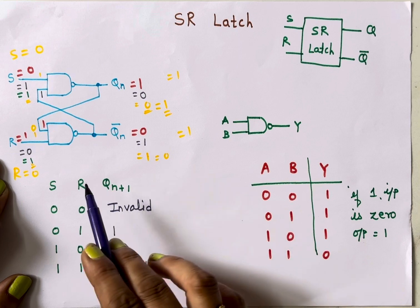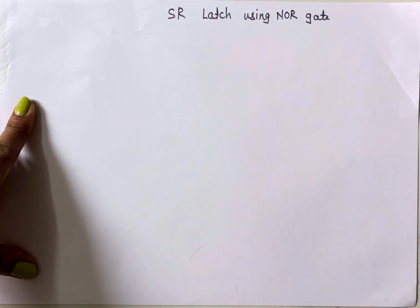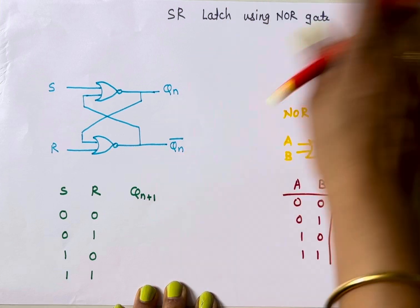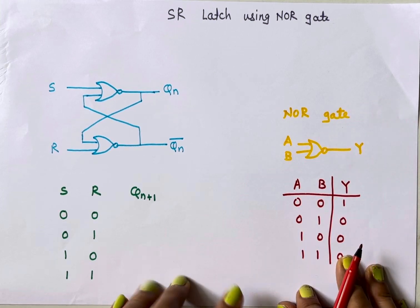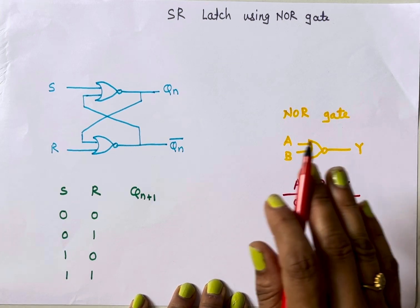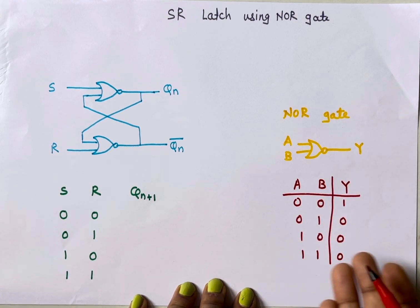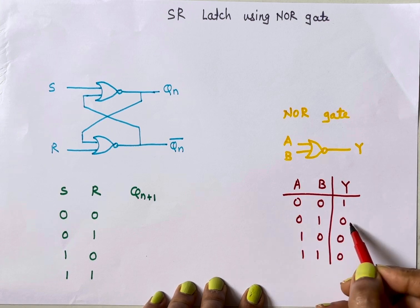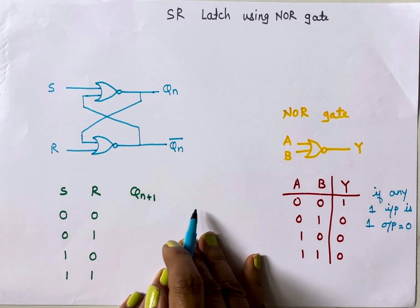Now let's see how the SR latch works when implemented using NOR gates. The diagram is the same — we only replace NAND gates with NOR gates. Let's also review the NOR gate truth table. NOR is inverted OR. In OR, when both inputs are zero the output is zero; otherwise one. Inverted, NOR gives output one only for zero-zero input; if any one input is one, the output is zero.